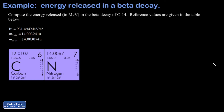In this video we're looking at the beta decay of C14 and we're trying to compute the total energy released. We're given a table of reference values, including the atomic mass unit in MeV per c squared. I'll post a link to a video where I showed how to convert kilograms into MeV per c squared if you're curious.